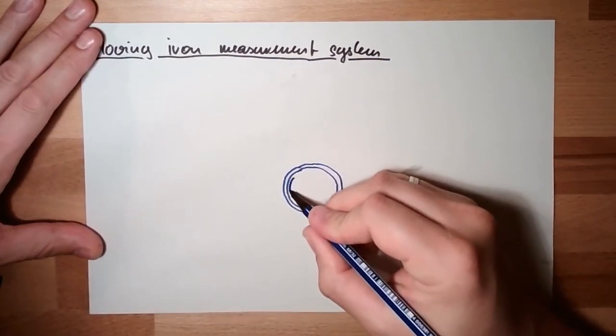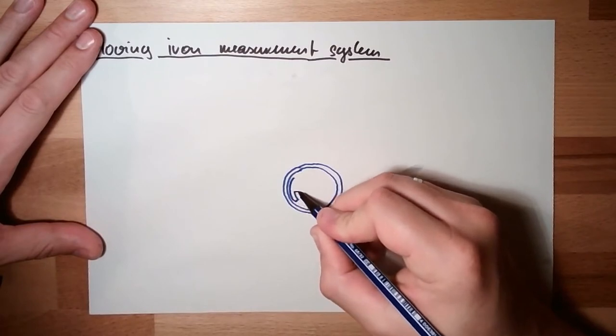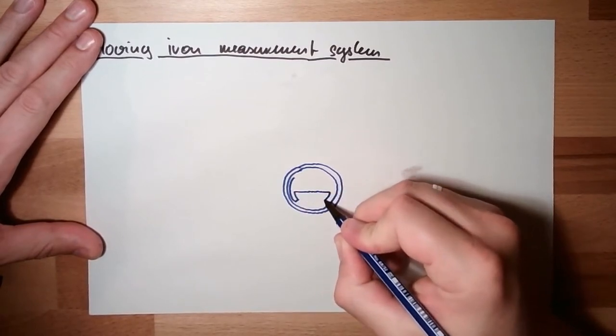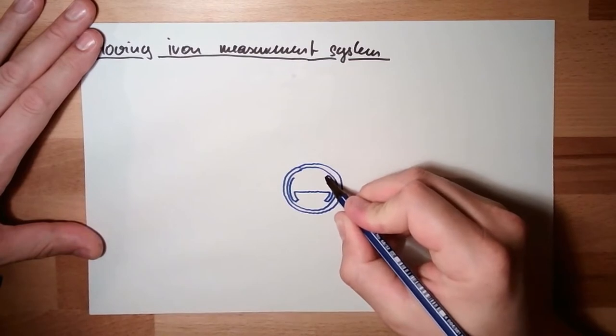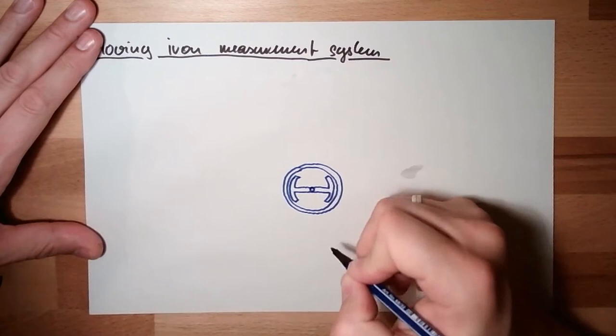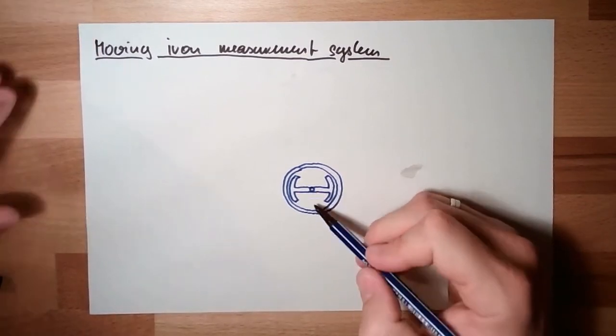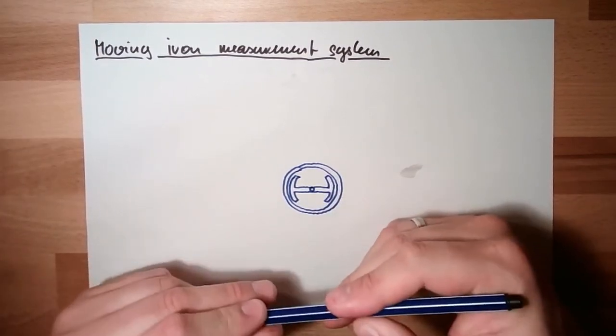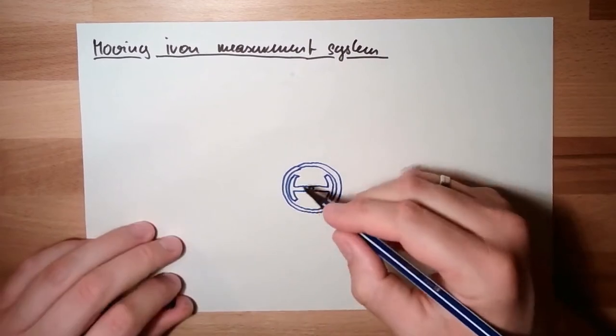And then we have an iron piece which is shaped a little bit like this, like an arch, let's say. And this inner iron piece can move.